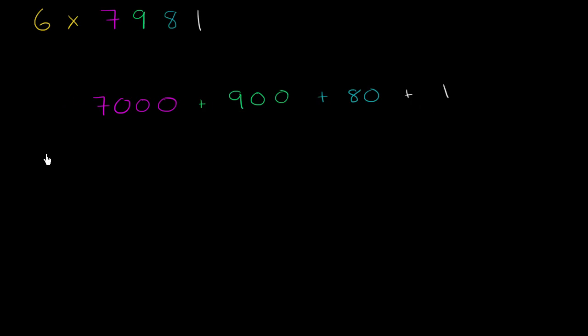And to help us keep track of things, let me draw a little grid right over here. So this is the 6. And we're going to have to think about what 6 times 7,000 is, 6 times 900, 6 times 80, and 6 times 1. So I'll make a little square or a rectangle for each of them.